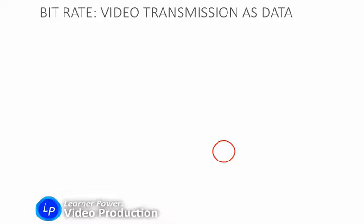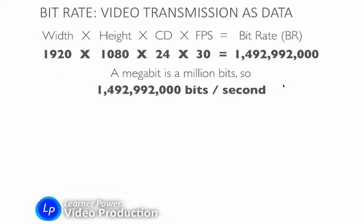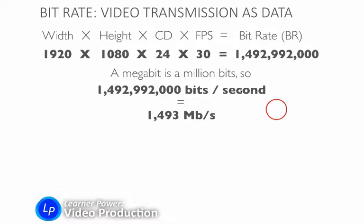Let's do a few calculations so we can see what a video professional might need to know. That 1.4 billion bits of data per second for high-definition video — let's break that down to megabits, which is a lot easier to talk about. A megabit is a million bits, and so 1,492,992,000 bits per second is equal to approximately 1,493 megabits per second. I did a little rounding — the 2,992,000 is pretty close to 3 million, so we're looking at 1,493 megabits per second for this video.